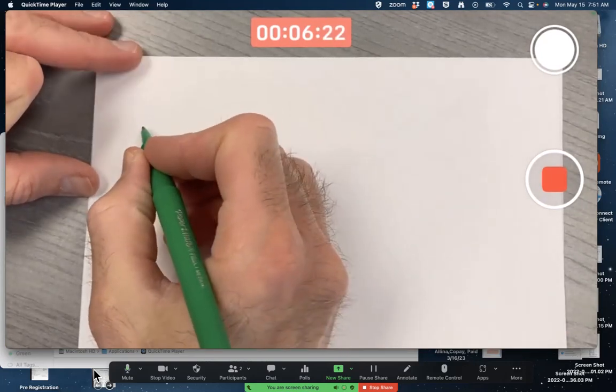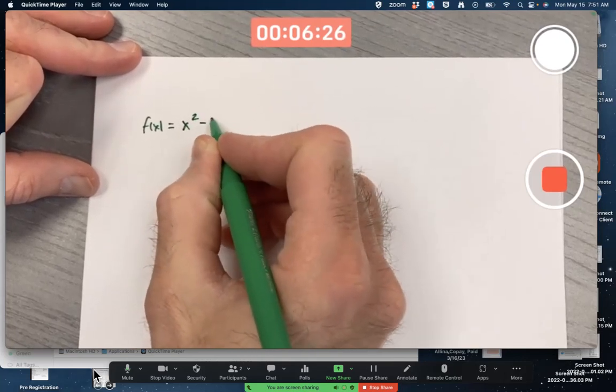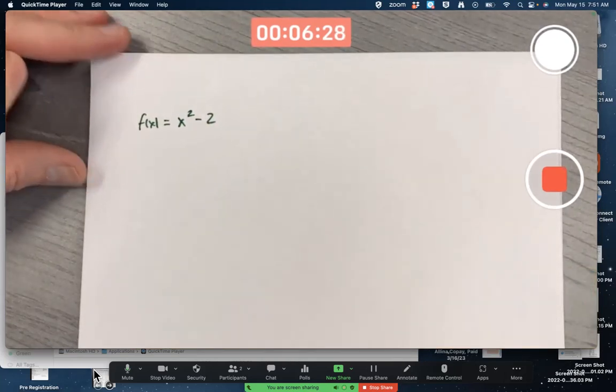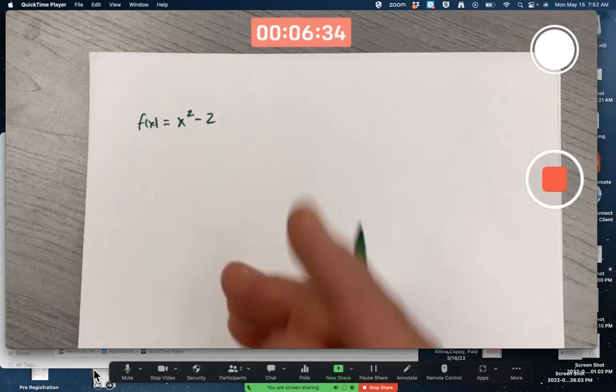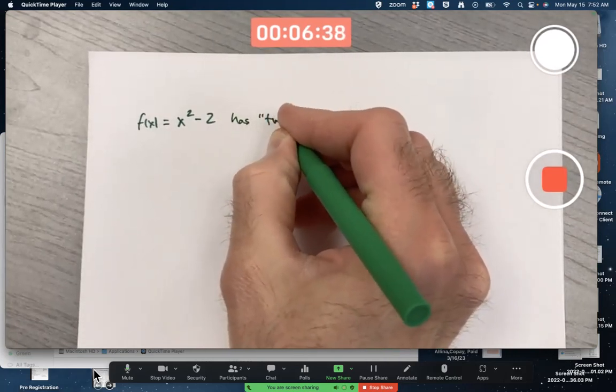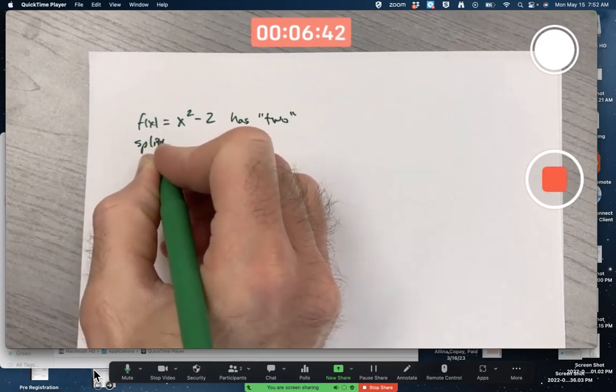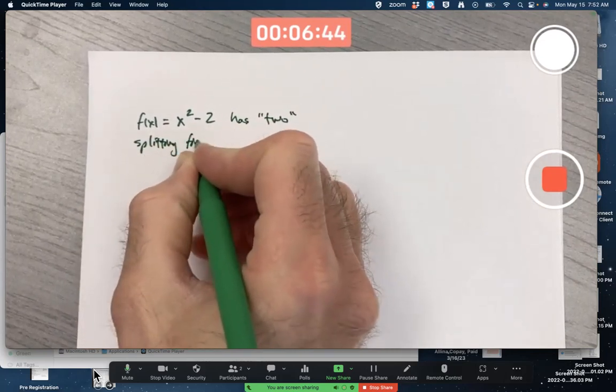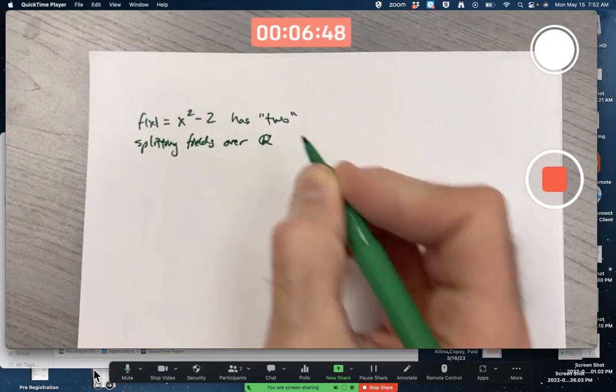We've talked about how this polynomial f(x) = x² - 2 could be thought of as having a couple of different splitting fields over the rationals, has quote-unquote two splitting fields over the rationals Q.